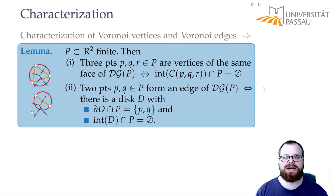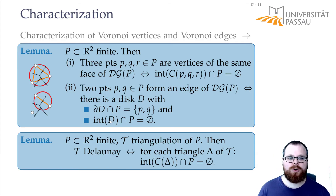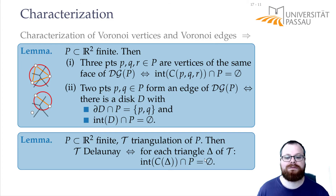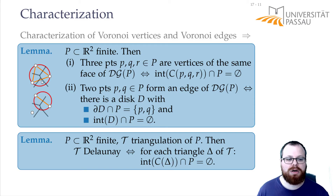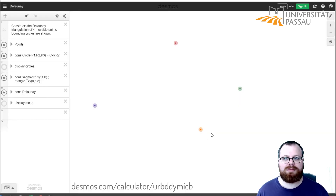There is another equivalent direct definition: if we have a point set and any triangulation, then it is Delaunay if for every triangle of this graph, the interior of its circumscribed circle is empty. This is the so-called empty circumcircle property.